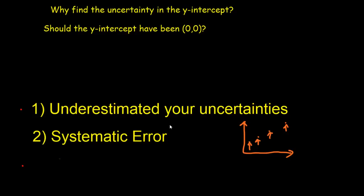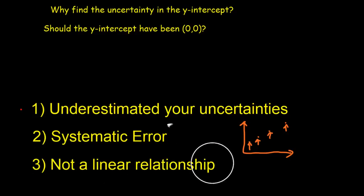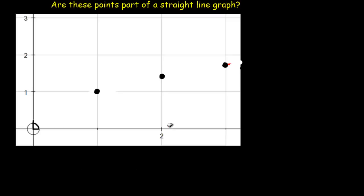The third possibility is that you don't really have a linear relationship there. And that's quite possible. Let's consider this data. Here we've got three points, and it certainly looks to me like we've got a linear relationship from those. I can draw a line through the three points. But if we, the way I actually generated those three points was using a square root function.